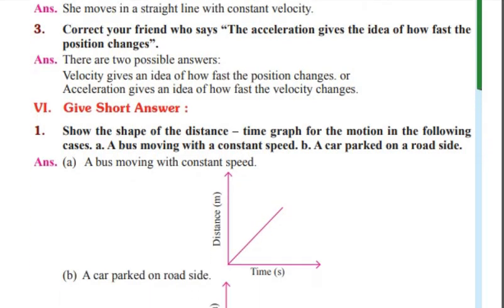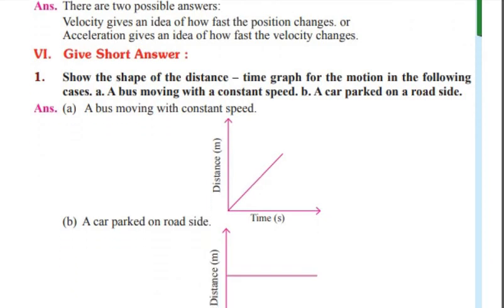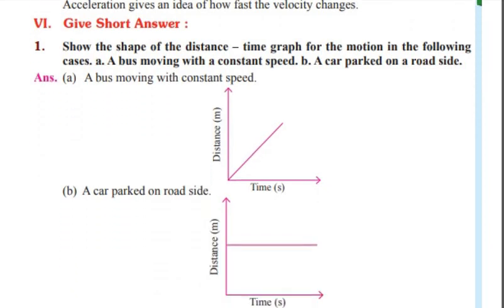Give short answers: Show the shape of the distance-time graph for the motion in the following cases — a bus moving with constant speed, and a car parked on the roadside.